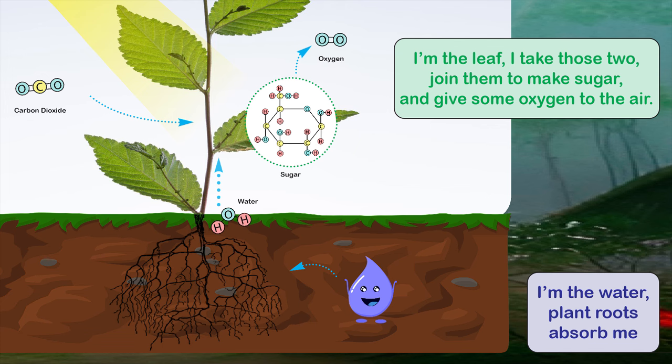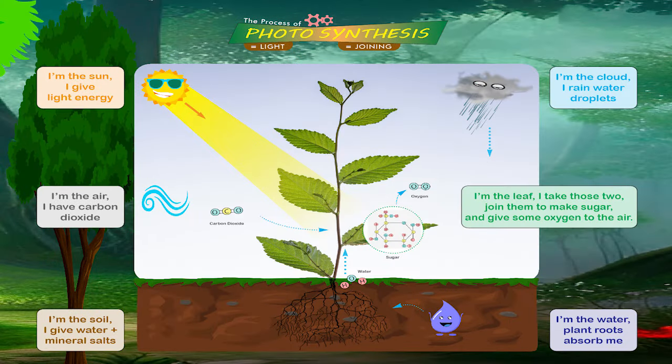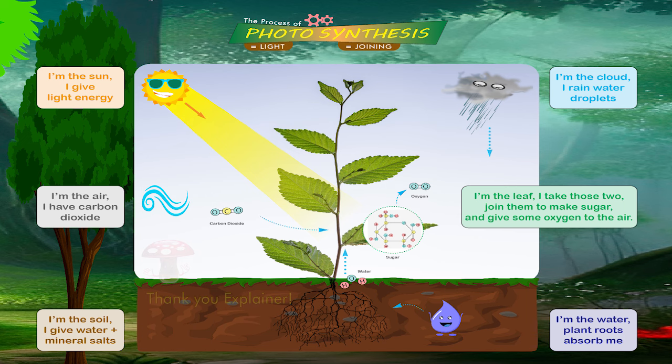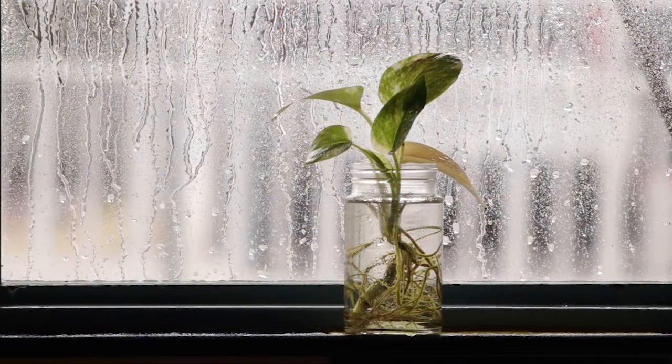Finally, inside every leaf, water and carbon dioxide are joined together in a certain way to make sugar. This operation will produce oxygen. Thus, the plant takes carbon dioxide from the air and gives it oxygen in return. Thank you, explainer.